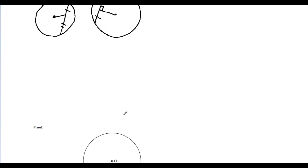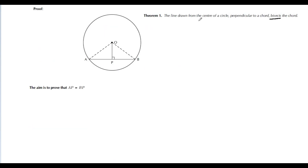It's a theorem so we need to prove it. The theorem states: a line drawn from the center of the circle perpendicular to the chord bisects the chord. The aim of our proof is to show that AP equals BP — that this line here is equal to this line here. Let's list what we have: we have a circle, and we have two triangles.